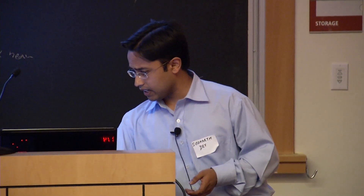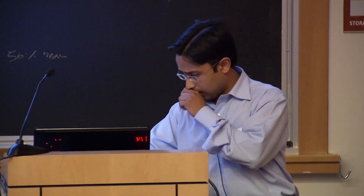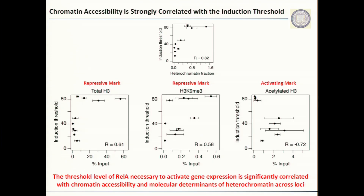To further validate these results, we performed ChIP for known molecular marks of repressive or activating modifications. We found that increasing levels of induction threshold are associated with increased levels of repressive marks, whereas clones with increased induction threshold have lower activating marks, implying that clones integrated into more closed chromatin require higher levels of REL-A to activate gene expression.